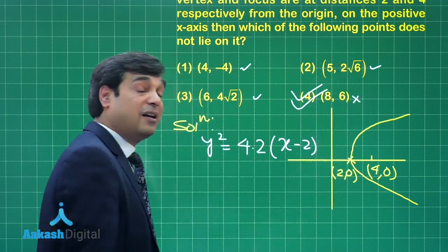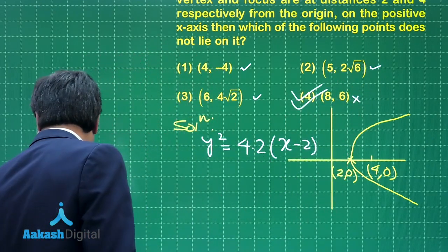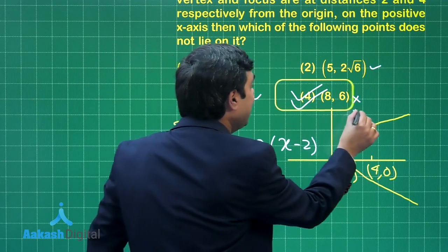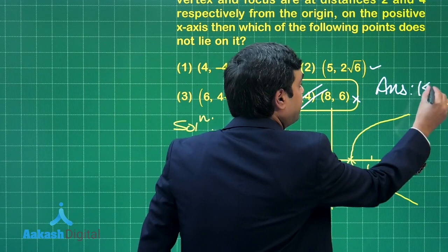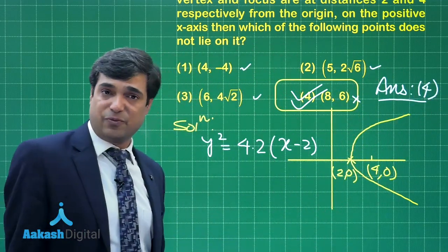What is the correct answer here? Option number 4 is the correct one, as (8,6) is not lying on the given parabola. Let us move on to the next question.